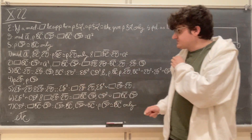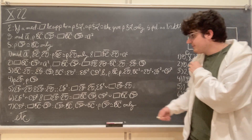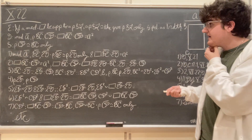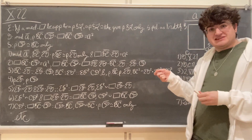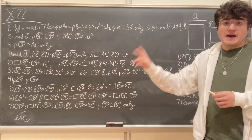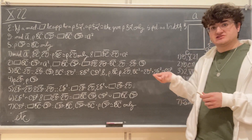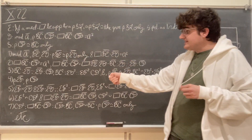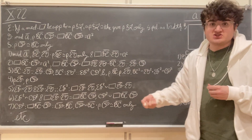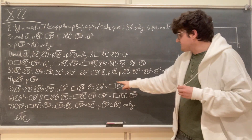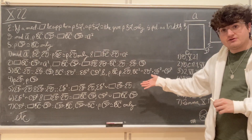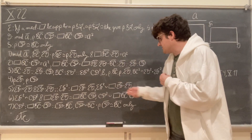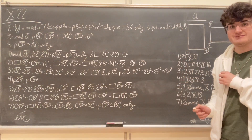Now, EF squared is commensurable with CD squared — we had shown this in our third step. And the rectangle EF times EG is equal to the rectangle BC times CD — we had shown this in our second step. So by Proposition 10.13, magnitudes commensurable with each other are also incommensurable with the same. Because EF squared is incommensurable with the rectangle contained by EF and EG, and CD squared is commensurable with EF squared, CD squared is incommensurable with the rectangle contained by EF and EG. But the rectangle EF times EG equals the rectangle BC times CD, so CD squared is incommensurable with the rectangle BC times CD.